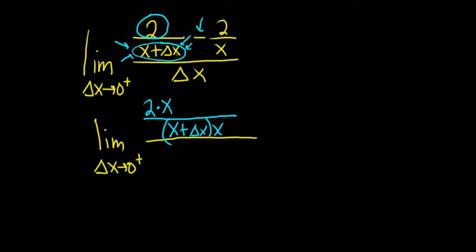Then it's minus, so minus 2 times whatever is missing here to get the LCD. So that'll be x plus delta x. It's all over delta x, and the top part is in parentheses.